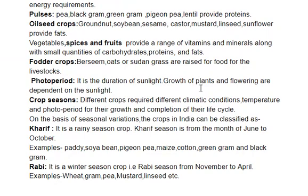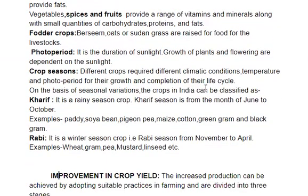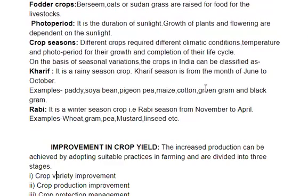Rabi crops grow from November to April — for example, wheat, pea, mustard and linseed.